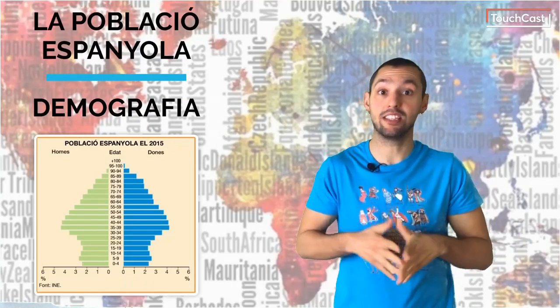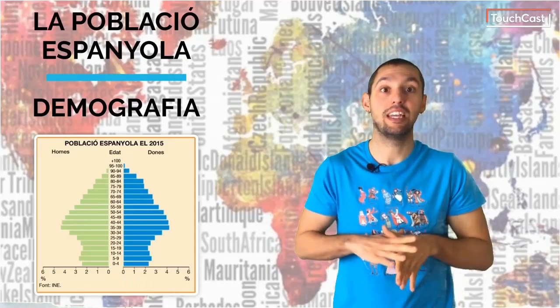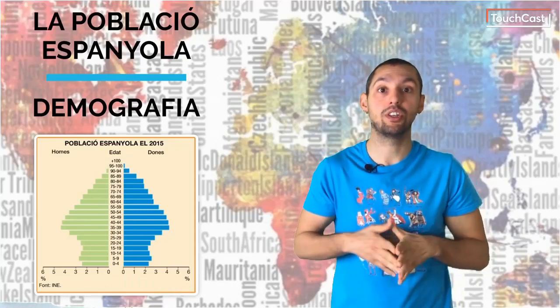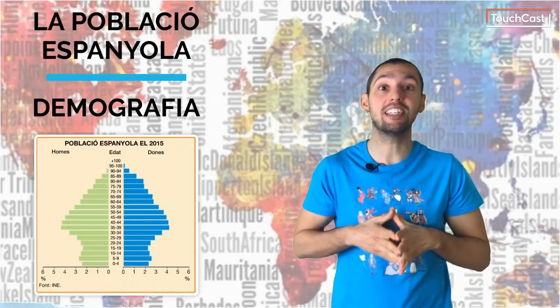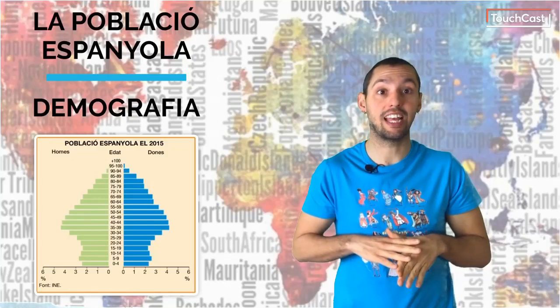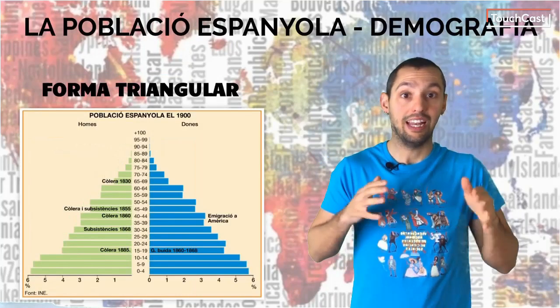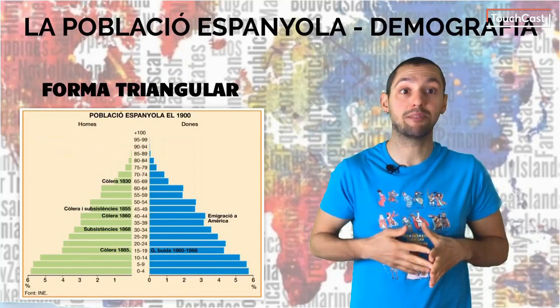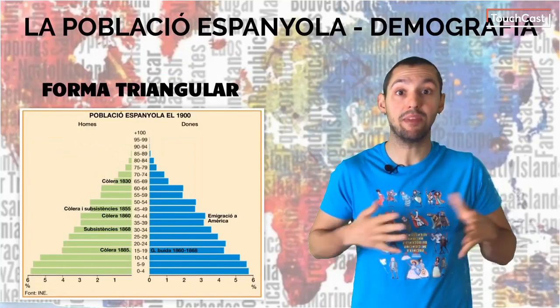A propòsit de l'estructura per edat, hem de tenir en compte les franges d'edat: entre els 0 i 14 anys, que són els joves; entre 15 i 64, els adults; i 65 anys i més, que són els ancians.